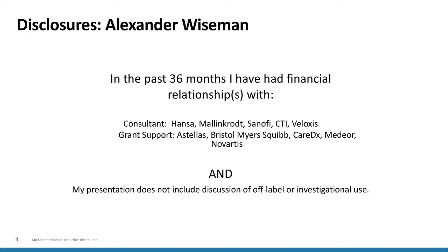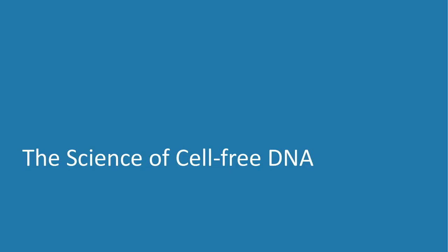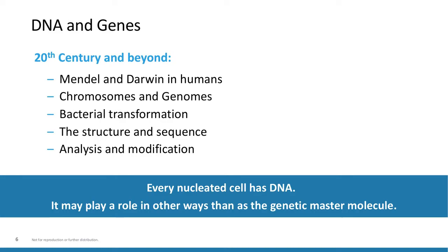Let's begin by briefly reviewing the science of cell-free DNA. In the 20th century we saw an explosion in genetics. In the 1800s, Mendel first described Mendelian genetics, although his work was under-recognized. It wasn't until Thomas Morgan experimented with fruit flies in the early 1900s that he gave Mendel the credit he deserved. We then discovered chromosomes and genomes. Genes are the subset of chromosomes that code for proteins — only about 2% of total DNA in most species.